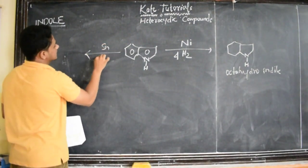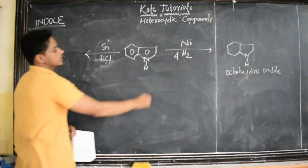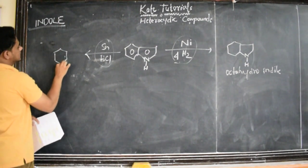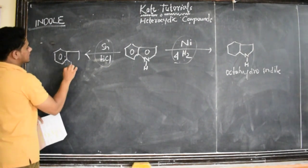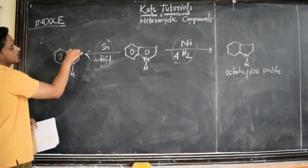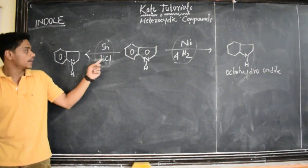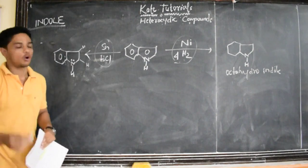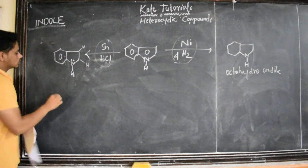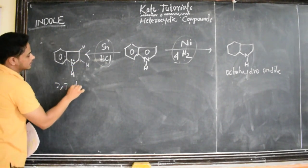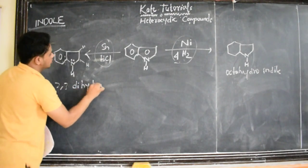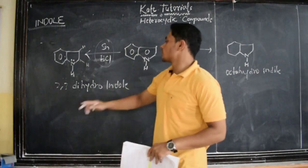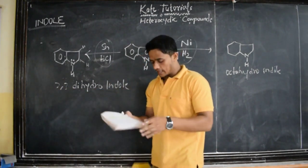If we treat indole with Sn and HCl, it is also a reducing agent, but a mild reducing agent — whereas the previous one was a strong reducing agent. What we get here is that the benzene ring remains as it is without any change. But the double bond in the pyrrole ring is affected: two hydrogens add here — one hydrogen at position two and another hydrogen at position three — removing that double bond. So, the compound we get is 2,3-dihydroindole. Whereas before we got octahydro (eight hydrogens added), here only two hydrogens are added at positions two and three, so it is 2,3-dihydroindole.